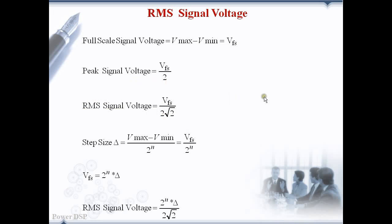Since the RMS noise voltage is in terms of del we have to change the RMS signal voltage also in terms of del. We know the step size del is equal to V maximum minus V minimum divided by 2 power N, which is the full scale voltage. VFS is then 2 power N into del.